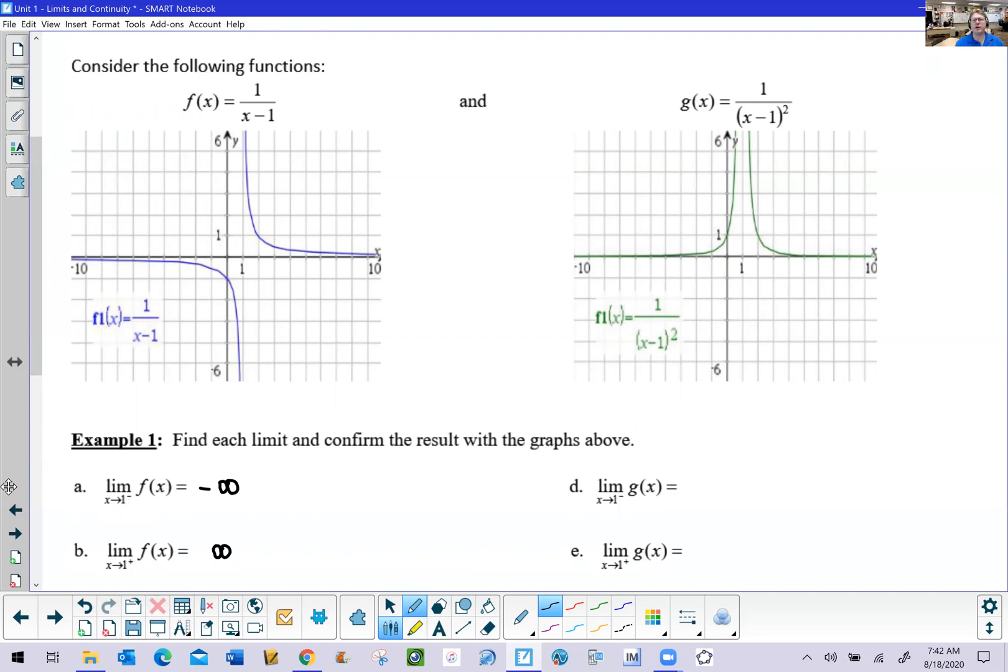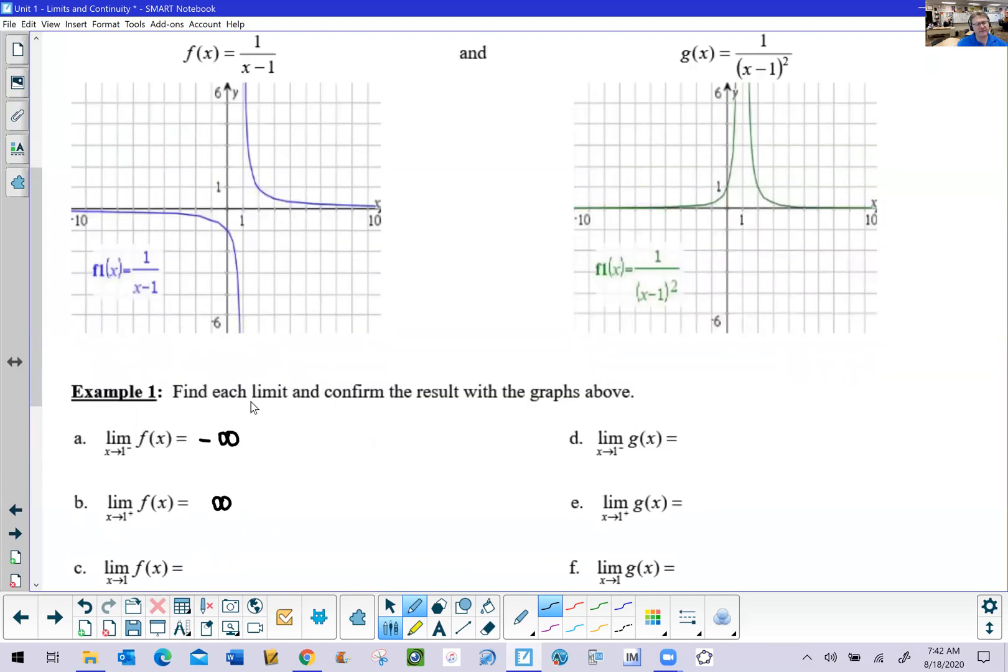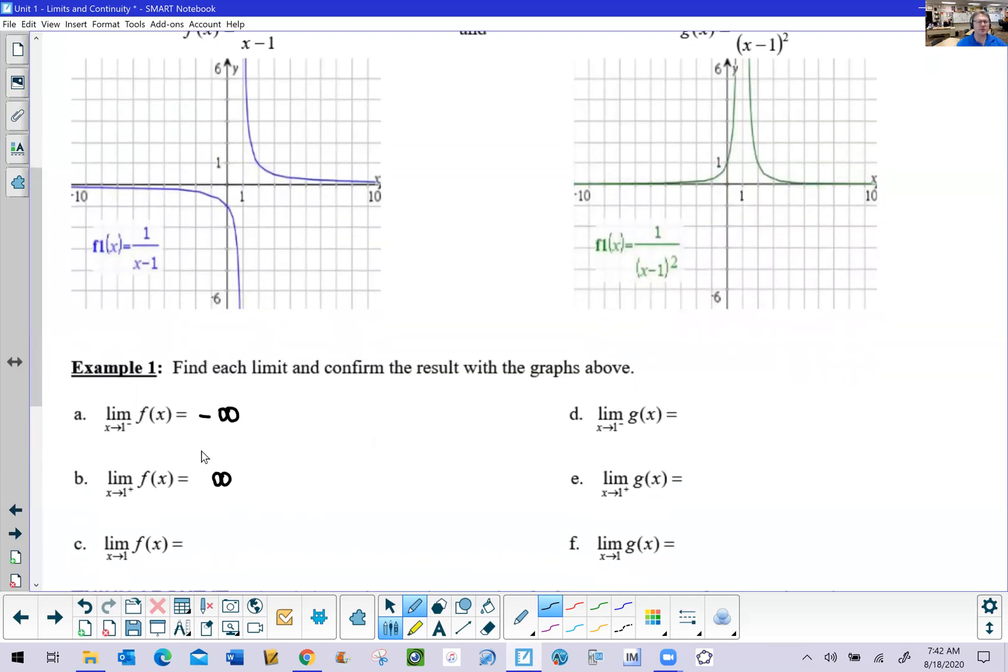I know we talked about how anytime infinity is an answer to a limit, we could say that the limit does not exist. And that's true, there's nothing wrong with that. However, I think these two answers are probably a little bit stronger because they'll tell you the reason why the limit doesn't exist. If you're looking at a one-sided limit, go ahead and just say infinity or negative infinity. As far as part c is concerned, the limit of f of x as x approaches one, that's going to be a situation where we have no choice but to say the answer does not exist.